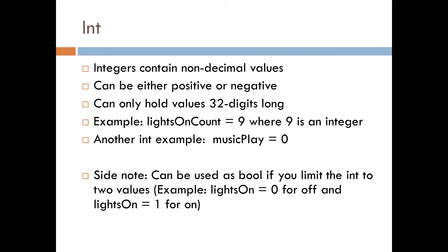As a side note, you can use integers like booleans — if you are familiar with C programming where you don't have booleans. For example, you create a variable called 'lights on': zero means it's off, one means it's on. You can use integers a lot of times for conditional statements. They're very useful if you want to have different states of whatever your script is doing.